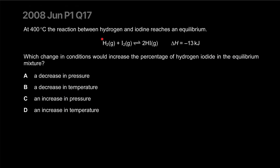At 400 degrees Celsius, the reaction between hydrogen and iodine reaches equilibrium. Which change in conditions would increase the percentage of hydrogen iodide? It's an exothermic reaction — it's producing heat. I like to put 'plus heat' on the product side if it's exothermic, and 'plus heat' on the reactant side if it's endothermic — just makes the temperature part easier. A decrease in pressure won't affect the equilibrium at all because on the left-hand side you have two moles and on the right-hand side you also have two moles of gas.